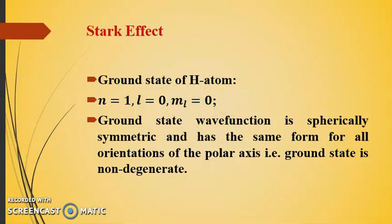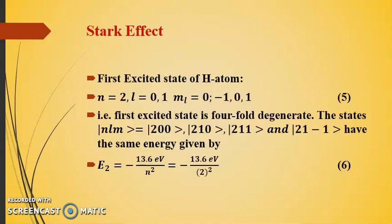Now let us talk about the ground state of the hydrogen atom. For the ground state, n = 1, l = 0, and m_l = 0. The ground state wave function is spherically symmetric and has the same form for all orientations of the polar axis. This means the ground state is non-degenerate.